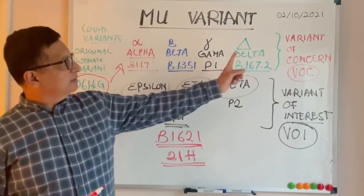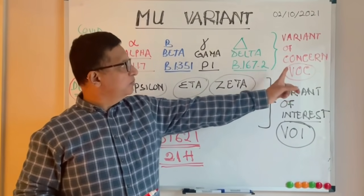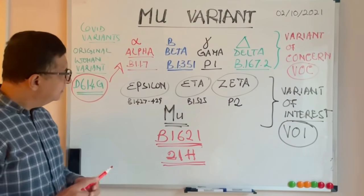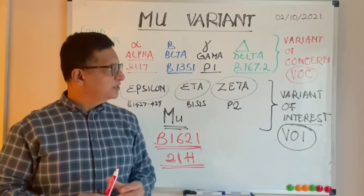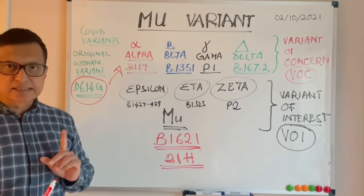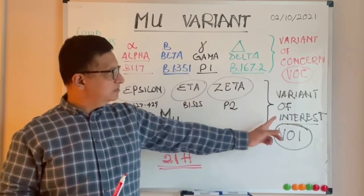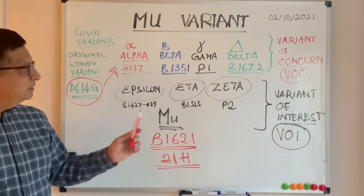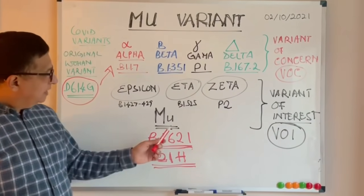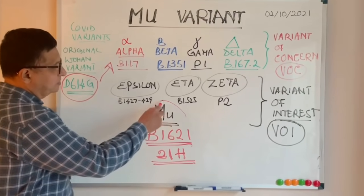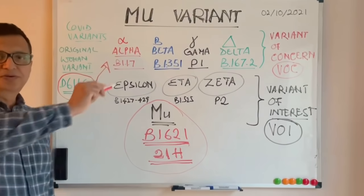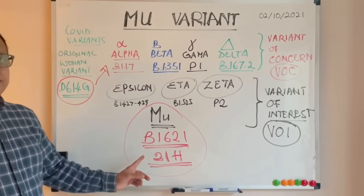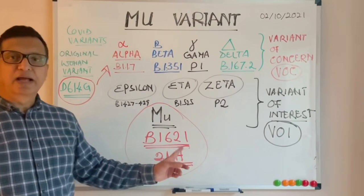These four variants — Alpha, Beta, Gamma, and Delta — are designated variants of concern by the WHO. Apart from those, there are variants of interest, including Epsilon, Eta, Theta, and the latest: Mu. Mu is B.1.621 and is also known as 21H.